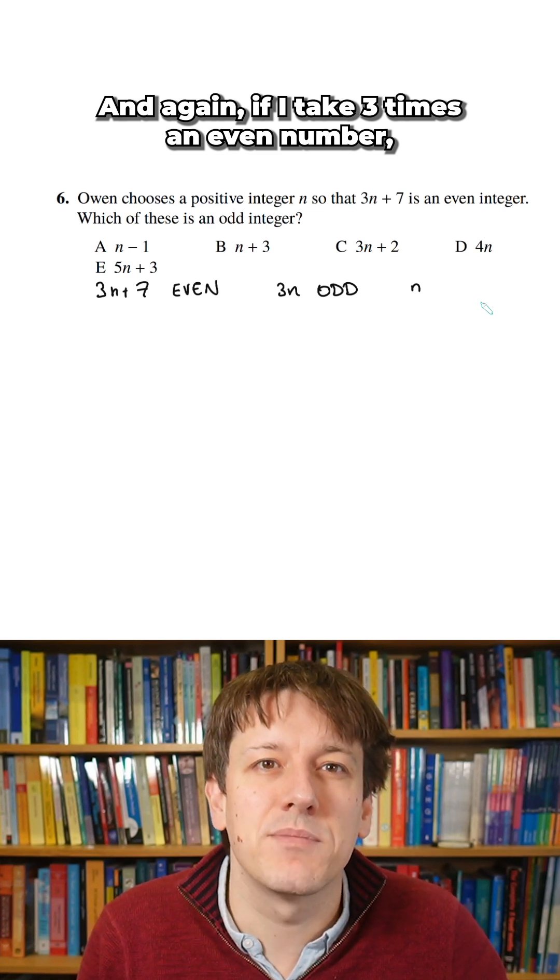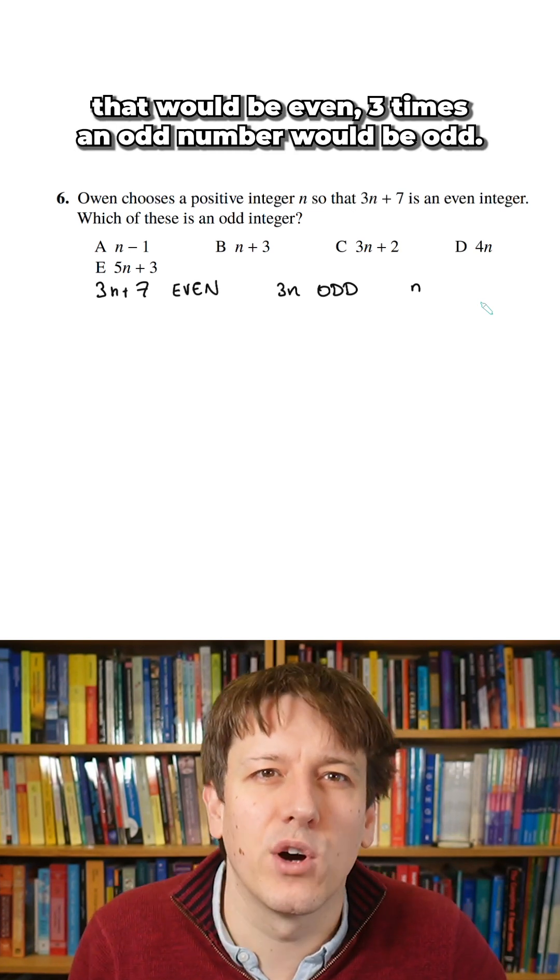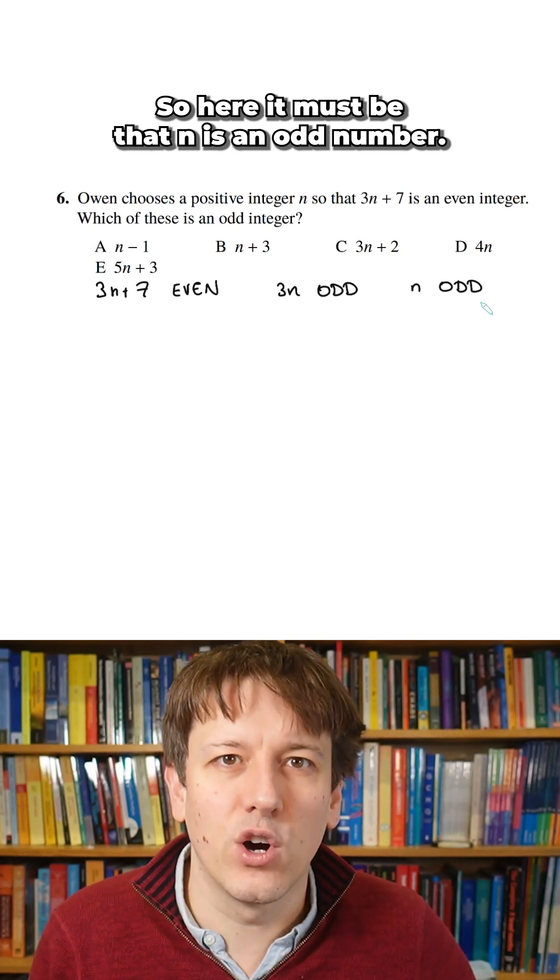And again, if I take 3 times an even number, that would be even. 3 times an odd number would be odd. So here it must be that n is an odd number.